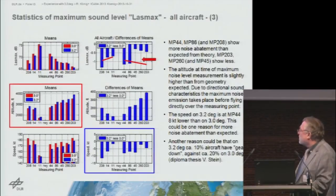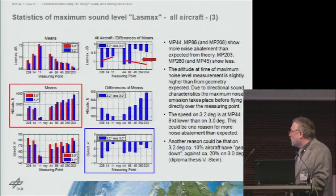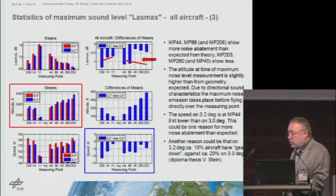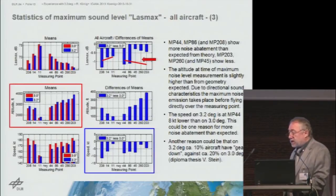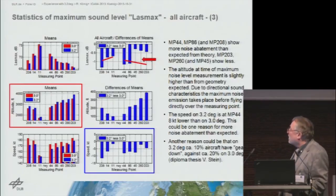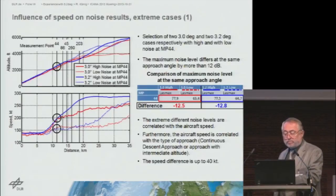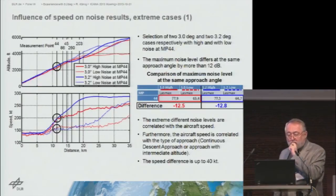We found that when using a 3.2-degree angle, 10 percent of aircraft already had the landing gear out above the Lerchesberg measurement point. For the 3.0-degree approach, it was 20 percent. So the landing gear is deployed at a later stage with 3.2 degrees, which also has an impact on noise emissions at measurement point 44.